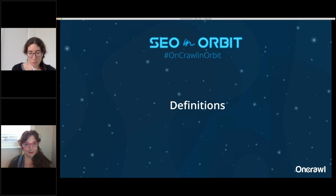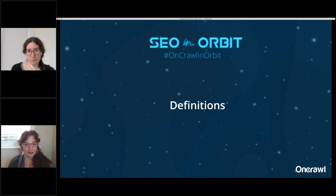AMP stands for Accelerated Mobile Pages. It's a special subset of HTML that follows very rigid guidelines and rules about what can and can't be included in a page. Google prefers AMP and would love it if the web were all AMP. You can build AMP versions of content, or go canonical AMP — replacing your old HTML versions with neat and tidy AMP HTML versions of a page only.